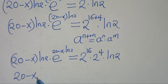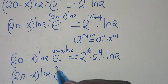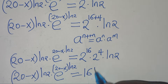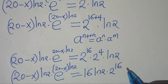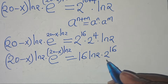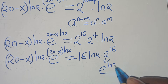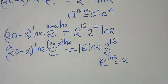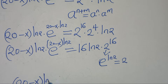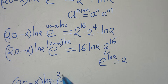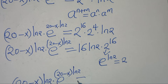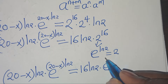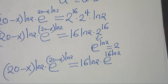So on the left hand side we have (20 minus x) times ln(2) times e to the power of (20 minus x) times ln(2), and this equals 2 to the power of 4, which is 16, times ln(2), times 2 to the power of 16. We can also apply the exponent property and substitute 2 with e to the power of ln(2), so we have (20 minus x) times ln(2) times e to the power of (20 minus x) times ln(2), equals 16 ln(2) multiplied by e to the power of 16 ln(2).